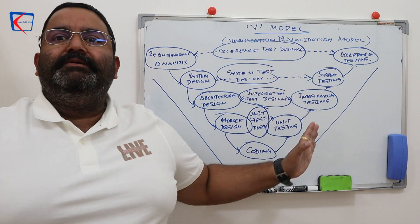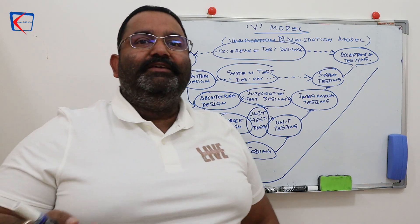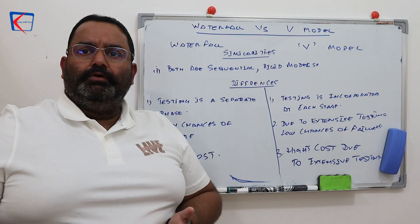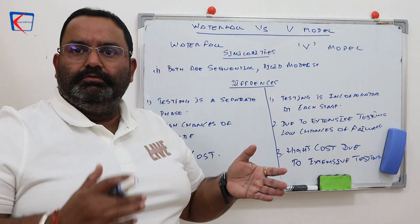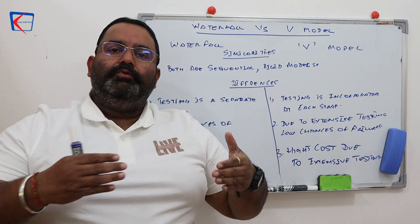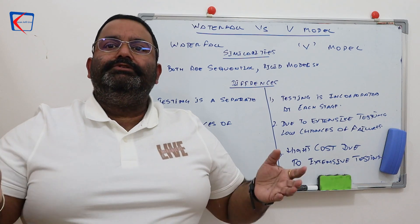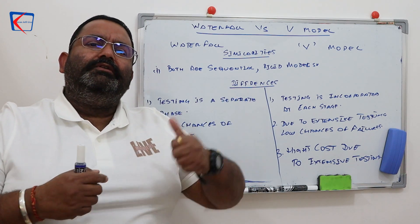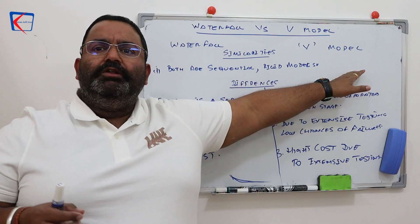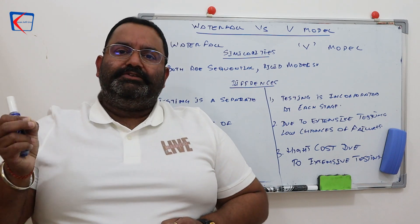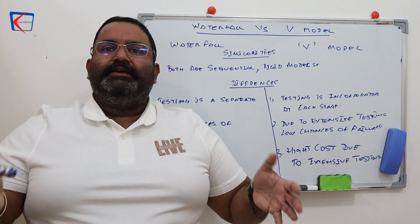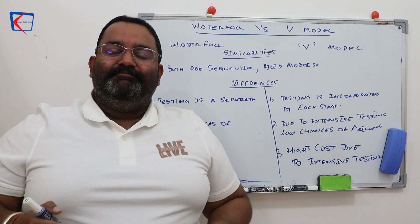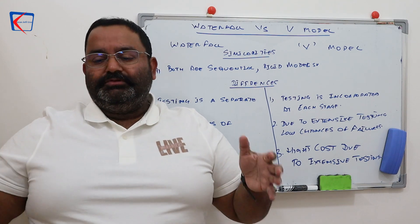Now for the similarities and differences between waterfall and V model. Similarities: both are sequential models where stages come one after another. Both are rigid, offering very little flexibility — once a stage is over it is very difficult to go back. The V model offers just a little flexibility, whereas the waterfall model does not offer any flexibility at all.